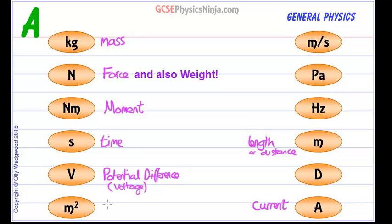M squared stands for area, meters squared, that's the quantity of area. Meters per second, that's speed or velocity.